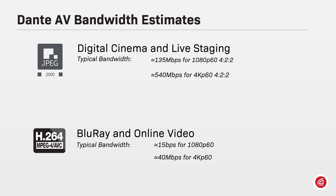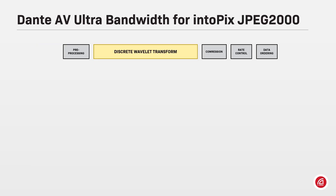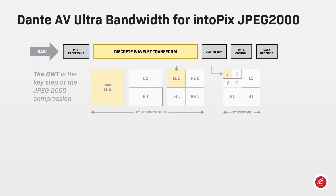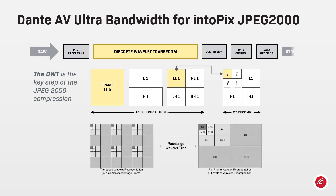It is also possible to work with low bandwidth codecs such as the popular H.264 and H.265. With such codecs, the bandwidth is very modest, not offering a considerable impact on the network. Typical bandwidth is around 10 to 15 Mbps for a 1080p 60 and 40 Mbps for a 4K 60 frames per second image.